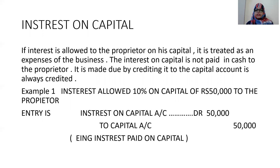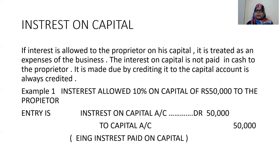Example: interest allowed at 10% on capital Rs. 50,000 to the proprietor. 10% of Rs. 50,000 is Rs. 5,000. Journal entry: interest on capital account Dr. Rs. 5,000, to capital account Rs. 5,000. Narration: being interest paid on capital. Whenever interest is paid it is not given as cash but is credited to the capital account — it is income to the proprietor but an expense to the business.